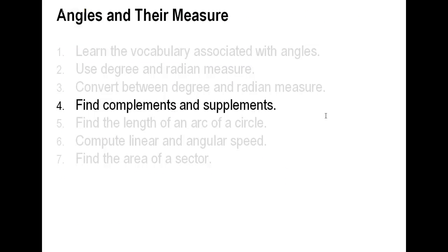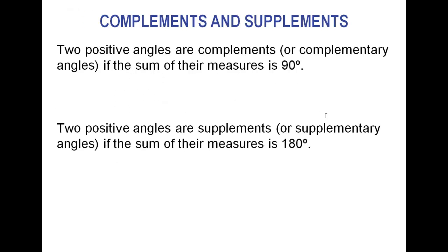Complements and supplements: it's very easy to find them once you know what they are. Two positive angles — they've got to be positive — are complementary if they add up to 90. A complement just means those two angles add to 90. Supplements are any two angles that add to 180. We choose 90 and 180 because those are important: 90 degrees is a right angle, and 180 degrees is a straight line.